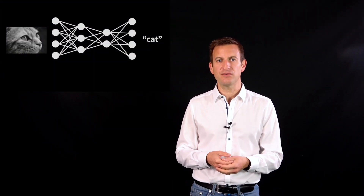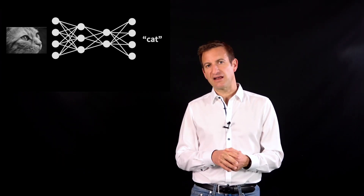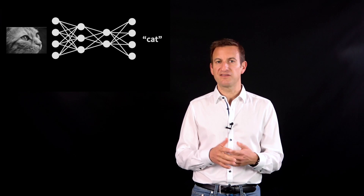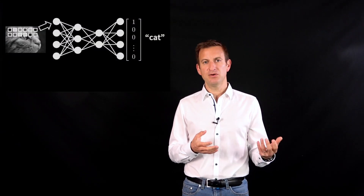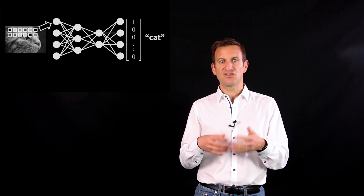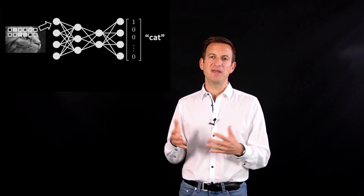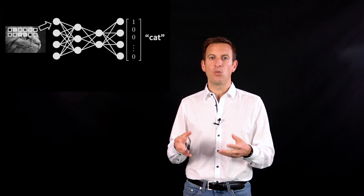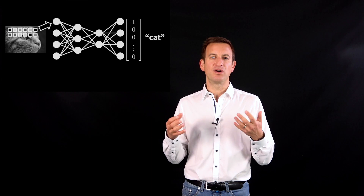For example, if we have an image of a cat and run it through a neural network that can perform image classification, this network should be able to tell us that's a cat on that image — not a dog or a human, but a cat. What this network does is take all the pixels of the input image into the input layer, which can be a very large vector, and transforms those intensity values so that in the end we get an indicator vector telling us what we see on that image is actually a cat. This is an example of image classification.